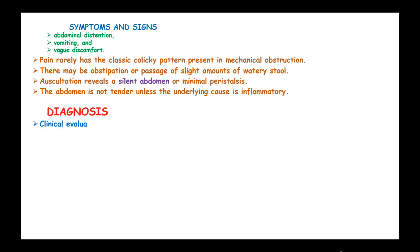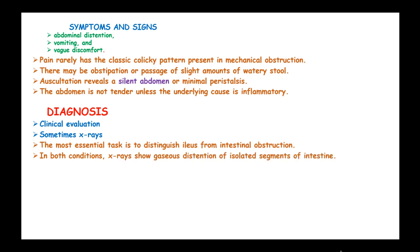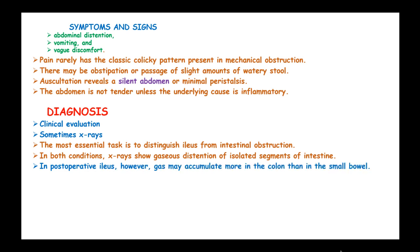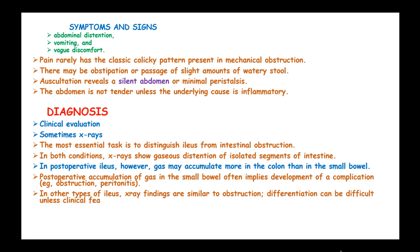The diagnosis of ileus includes clinical evaluation and sometimes x-rays. The most essential task is to distinguish ileus from intestinal obstruction. In both conditions, x-rays show gaseous distension of isolated segments of the intestine. In postoperative ileus, gas may accumulate more in the colon than in the small bowel. Postoperative accumulation of gas in the small bowel implies complications such as obstruction or peritonitis. In other types of ileus, x-ray findings are similar to obstruction. Water-soluble contrast studies may help differentiate between ileus and obstruction.